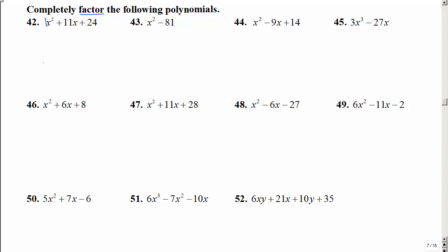So we have a trinomial with a leading coefficient of 1. So we just say what multiplies to get 24 and adds to get 11. And of course that's 3 and 8. The order does not matter.